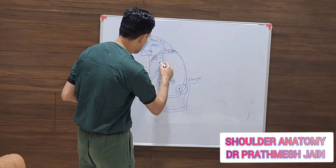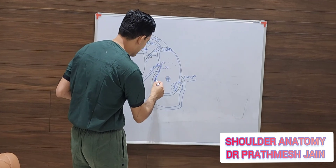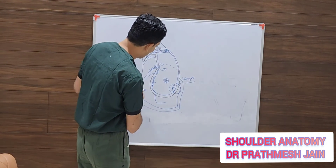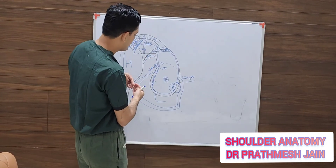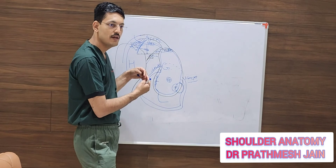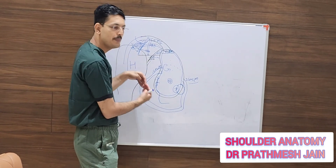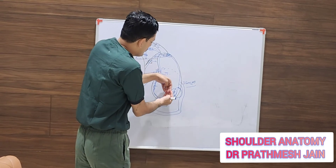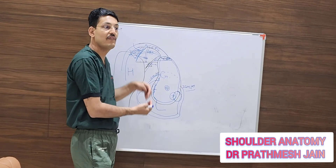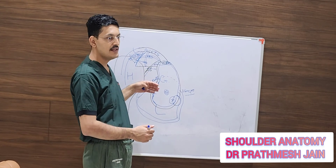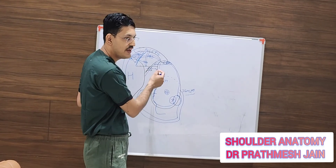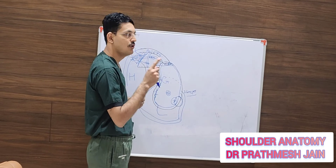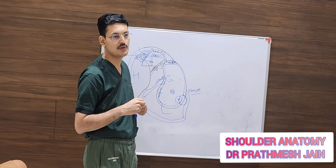In cases of labral tears — ALPSA lesions — this capsulolabral complex is separated from the glenoid like this. The IGHL and MGHL complex are separated, and you need to elevate it from the medial aspect — it is typically torn and attached on the medial part of the neck. You have to elevate it from there and reattach it more anteriorly over the face of the glenoid. Ideally, the repair of the labrum is on the face of the glenoid and not on the neck.